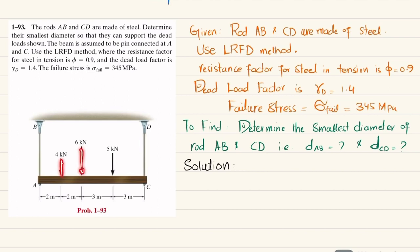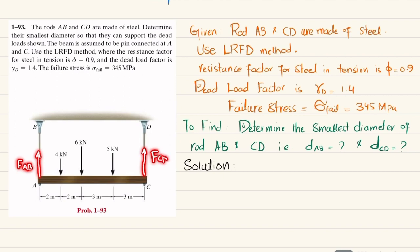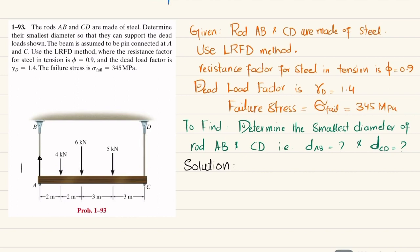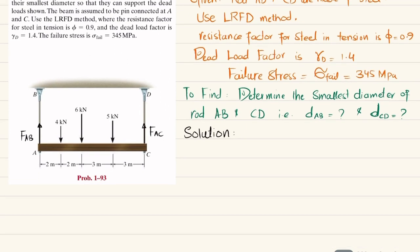Due to the dead load, there will be tensile stress in rods AB and CD. As a result, these rods exert a vertical force F_AB and F_CD on the beam. We will find F_AB and F_CD using equations of equilibrium. It is better to draw a separate free body diagram — I am already drawing it here. F_AB is the force exerted by the rod on the beam, and similarly F_CD.